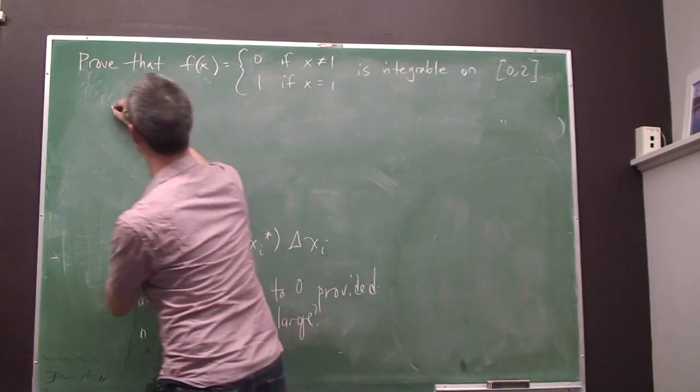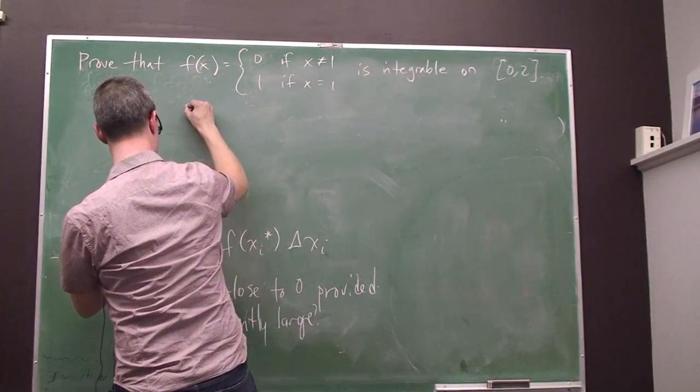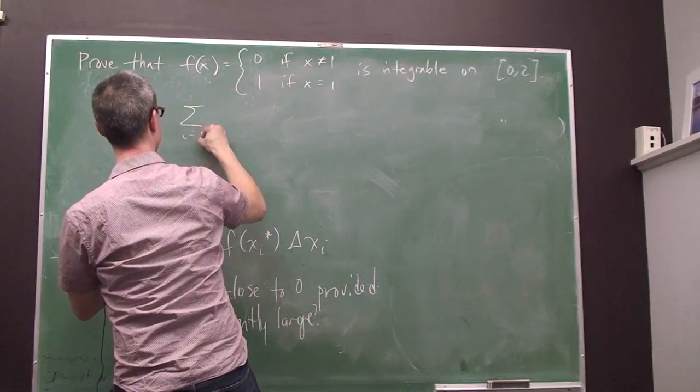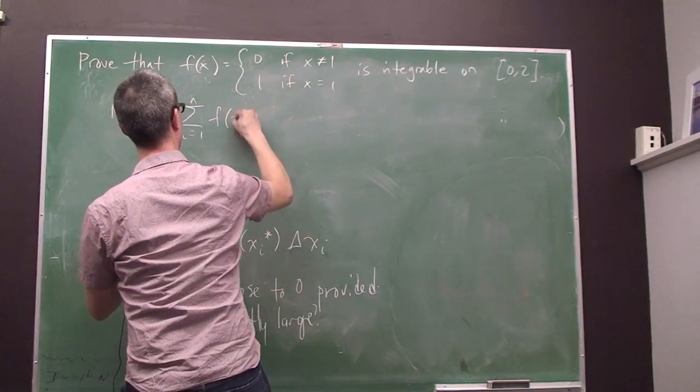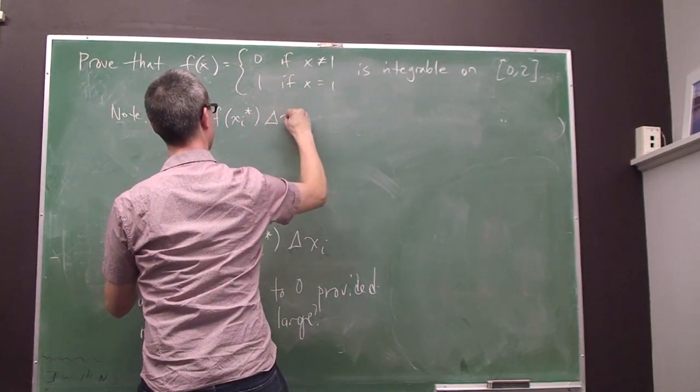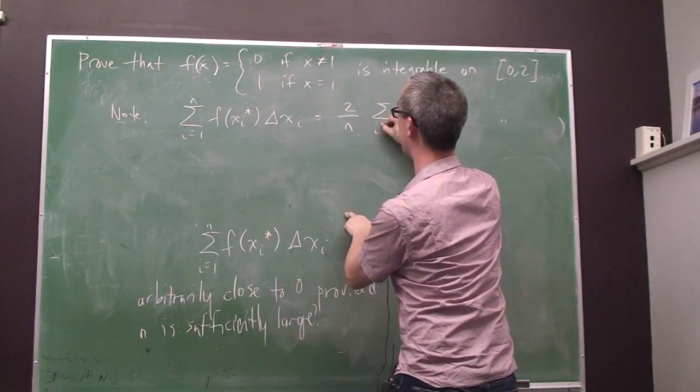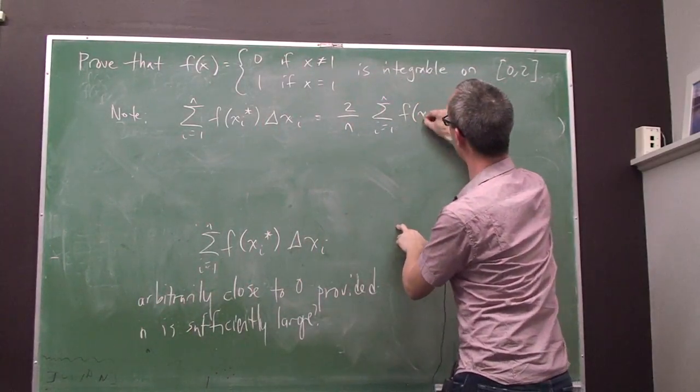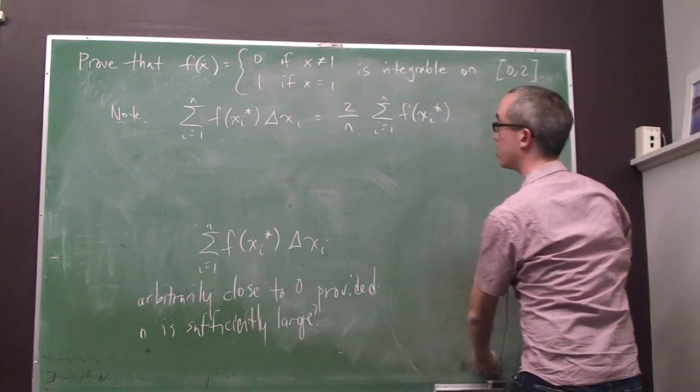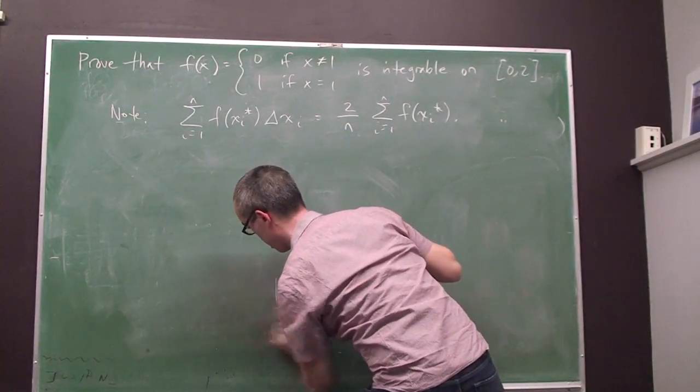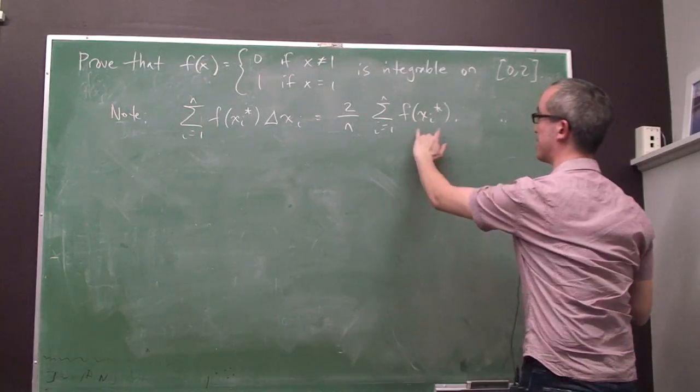So, let's note first of all, that this guy is in fact equal to 2 over n times the sum. So, the real question is, what is this guy?